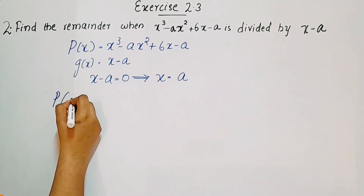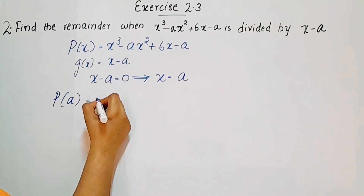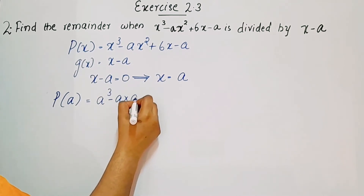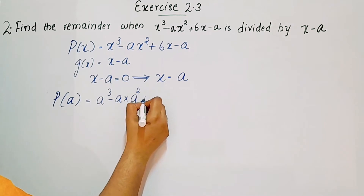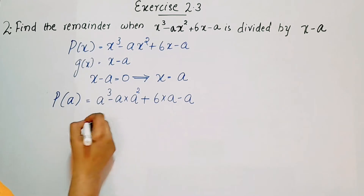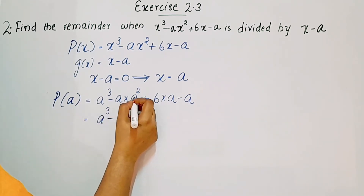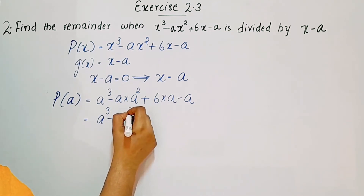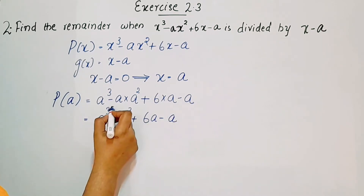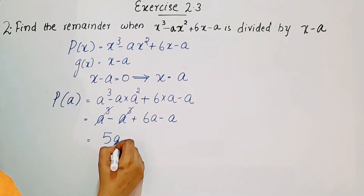We apply x equals a: p of a equals a³ minus a times a² plus 6 times a minus a. That gives a³ minus a³ plus 6a minus a, and the a³ terms cancel, leaving 6a minus a, which equals 5a.